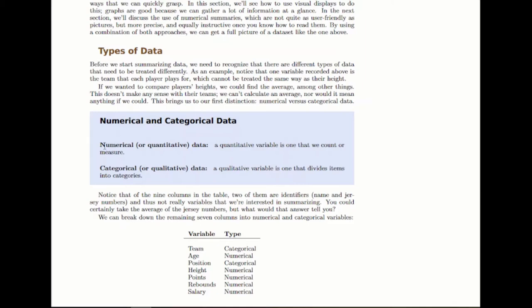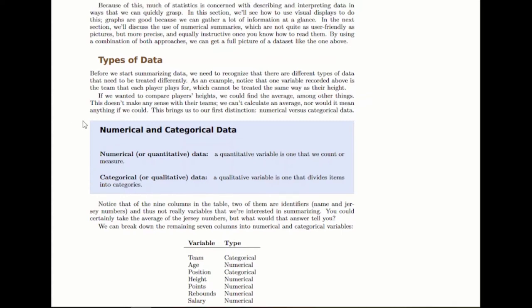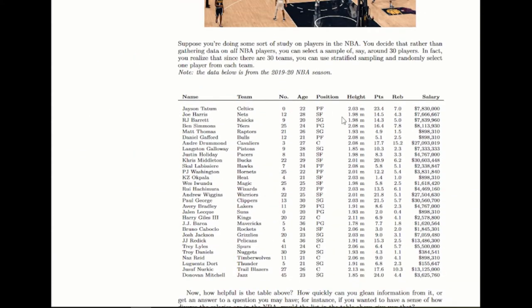we can notice some differences in the types of data that you'll see. Notice that some of those variables are numerical, meaning that you're measuring or counting something. For instance, their age would be numerical, their height, points, rebounds, salary, etc., would be numerical.